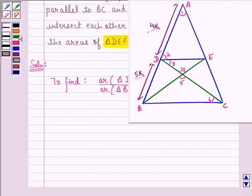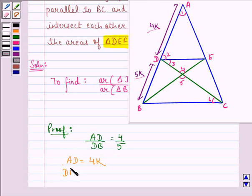Let us start with the proof now. We see that AD is to DB is equal to 4 upon 5. That is given to us in the question. So, we can say that AD is equal to 4K and DB is equal to 5K. This is what we have named them here.